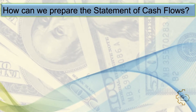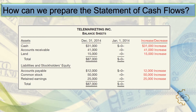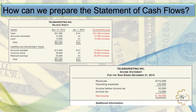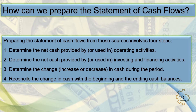How can we prepare the statement of cash flows? We need these three sources: comparative balance sheets, the current income statement, and selected transaction data. Preparing the statement involves four steps: (1) determine net cash provided by or used in operating activities; (2) determine net cash provided by or used in investing and financing activities; (3) determine the change in cash during the period; (4) reconcile the change in cash with beginning and ending cash balances.